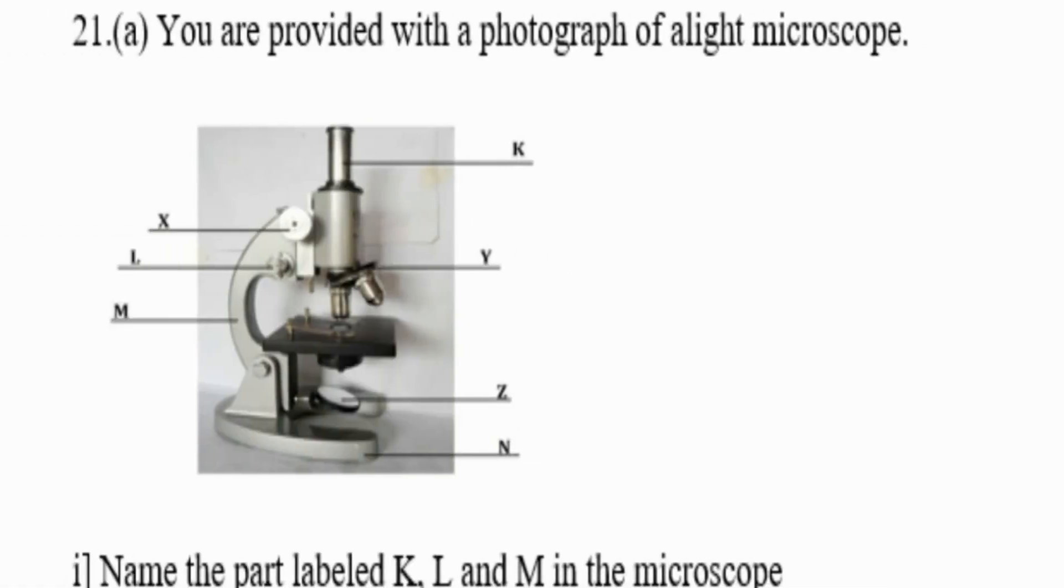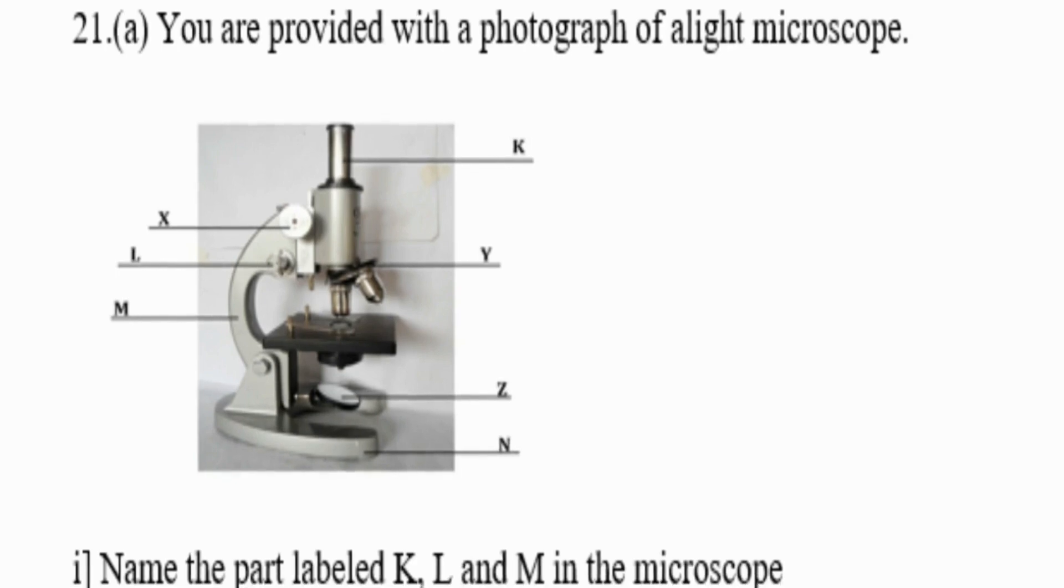That is a light microscope. Parts labeled here K, Y, Z, N, X, L, and M, and you are told name parts labeled K, L, and M in the microscope. You can see it there. Write for us in the comment section.